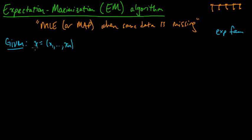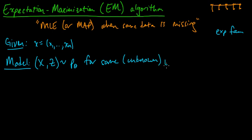So we're given some data, some observed data rather, and let's call that X. X is these observations, X1 through Xn. But our model is X and Z. We have random variables X and Z which are distributed according to some joint distribution, P_theta for some unknown parameter theta in some set of parameters. And typically this P_theta here is an exponential family.